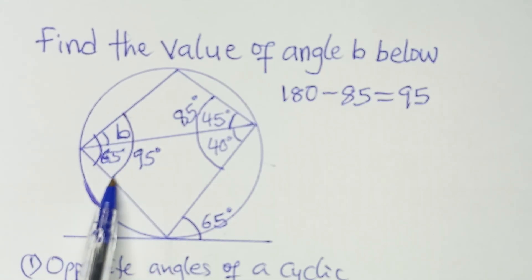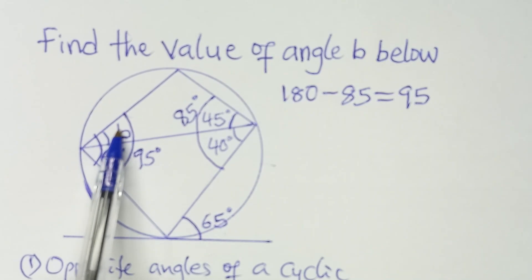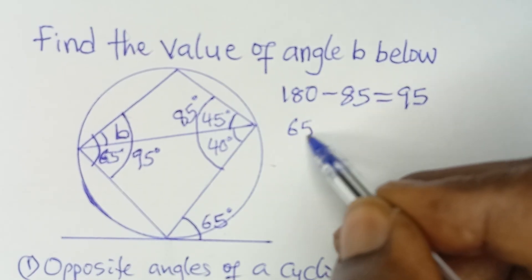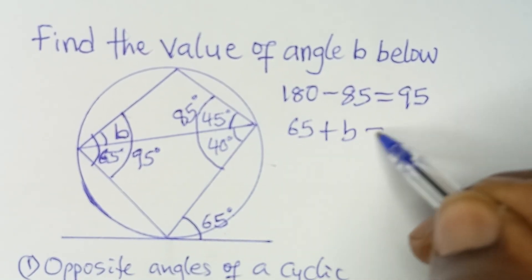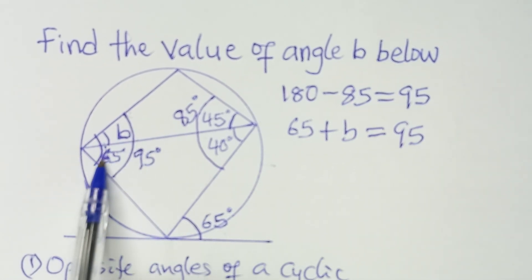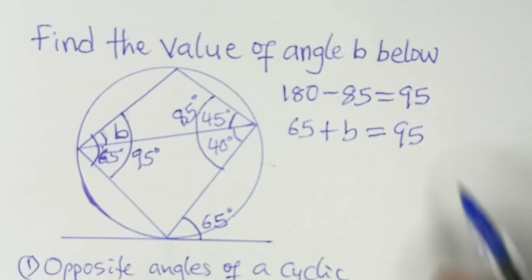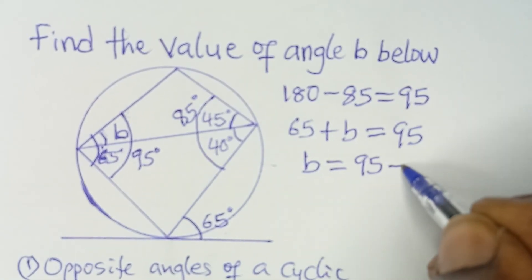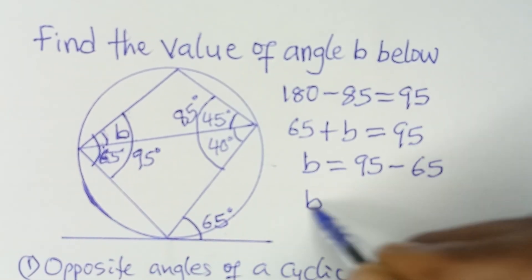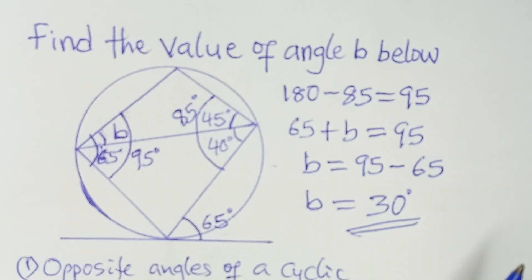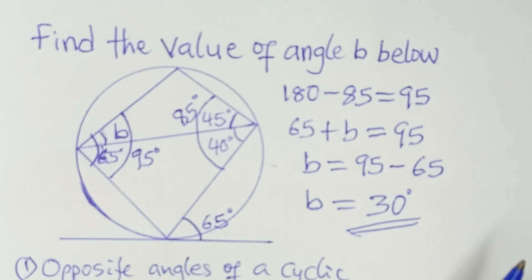The full angle here is 95 degrees. So 65 plus B should equal 95 degrees. That means this full angle is 65 here and B here, giving us 95. To get B, we say B equals 95 minus 65, which gives us B equals 30 degrees. That is our final answer. Please subscribe to this channel to get more detailed videos like this. Thank you for watching and see you in the next video.